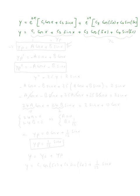Now, how do we identify yp? The terms c₃ cosine 5x and c₄ sine 5x match yc, so the remaining terms give us the form of yp. So yp will have the form A cosine x plus B sine x.